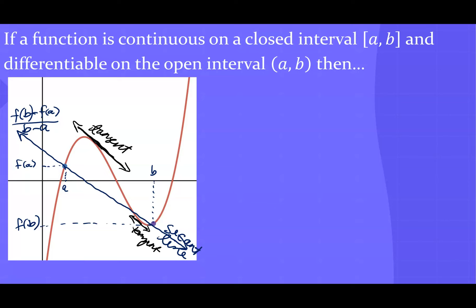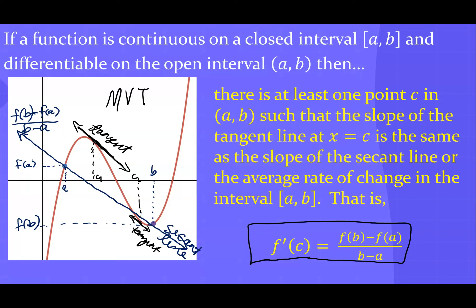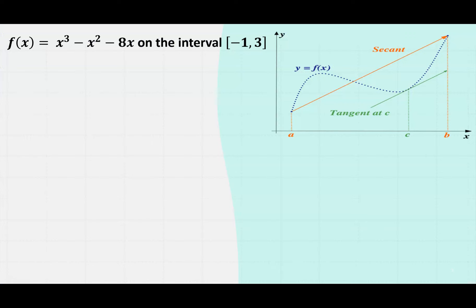The Mean Value Theorem says that if you have a function that is continuous on a closed interval [a, b] and differentiable on the open interval, then there must be at least one point c — in this case we see c1 and c2, so there are actually two points — in between a and b such that the slope of the tangent line equals the slope of the secant line, or the average rate of change. So f'(c) equals the average rate of change.